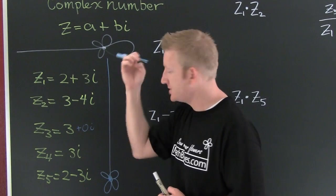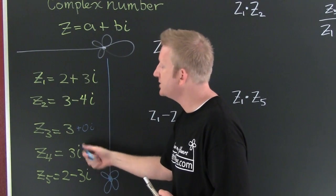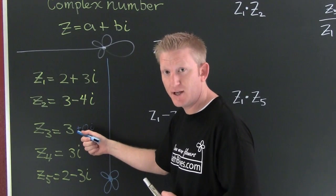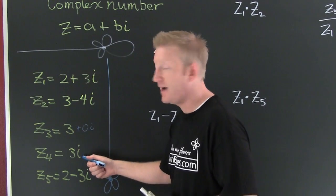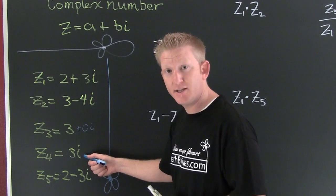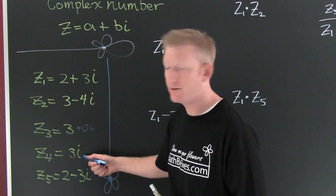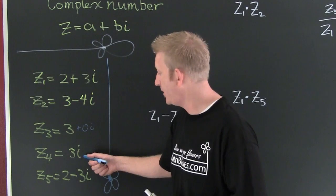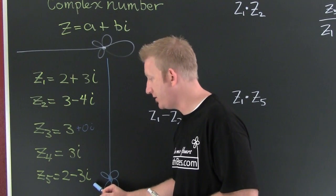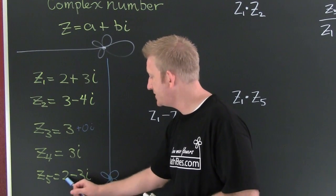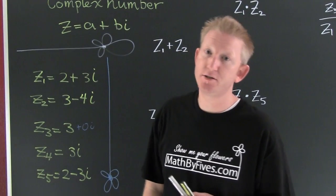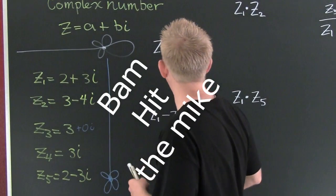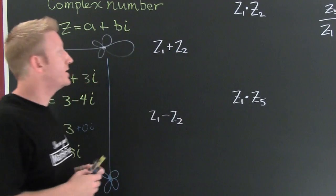z3 has a special name for that kind of complex number. It's purely real. Down here I have z4, that's purely imaginary. It doesn't have a real part, it only has an imaginary part. And then I have this last one, z5, which is 2 minus 3i. Let's go through some of these operations with complex numbers.